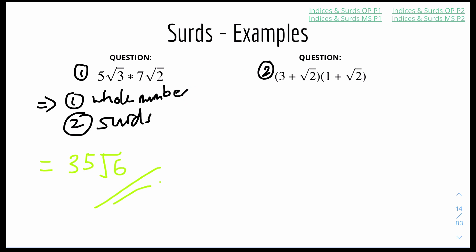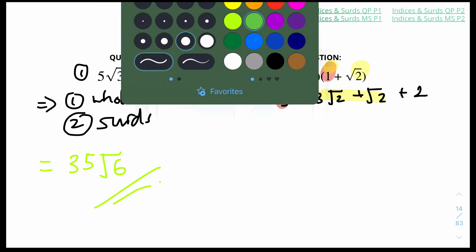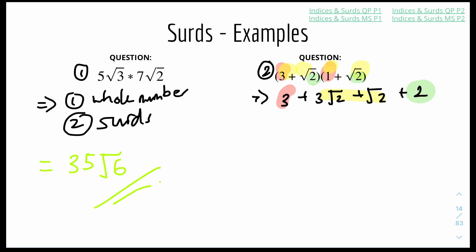Question 2: expanding the bracket using the FOIL method. We get 3 times 1 equals 3; then 3 times root 2; then root 2 times 1; then root 2 times root 2 which equals 2. To simplify, add the whole numbers: 3 plus 2 equals 5. Then 3 surd 2 plus surd 2 simplifies to 4 surd 2. So the final answer is 5 plus 4 surd 2.